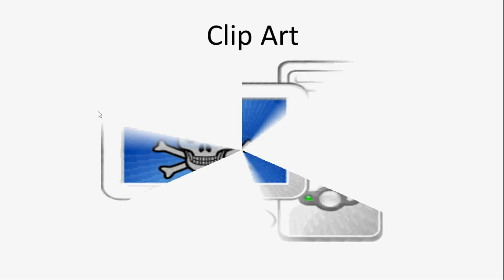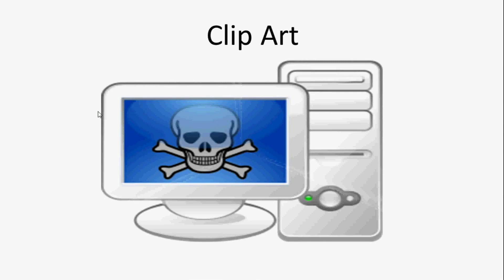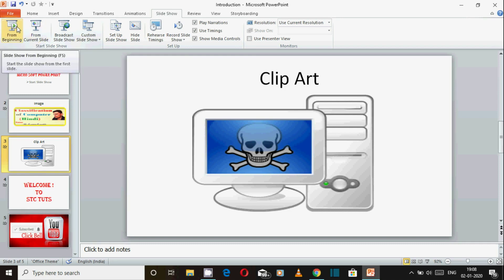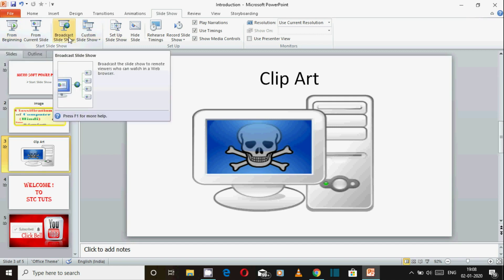Dekhiye, current slide se start hua. Yeh hai Start Slide Show ka doosra option, jisme humne seekha current slide se kisi bhi presentation ko dikhane ka tarika. Iska shortcut hai Shift+F5, aur From Beginning ka shortcut hai F5. Ab dekhte hain 'Broadcast Slide Show' kya karta hai.